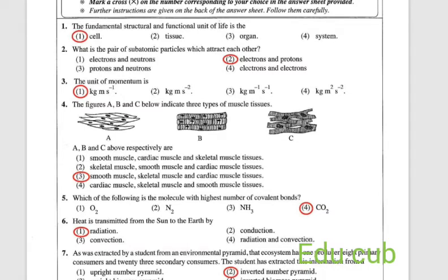Second question: what is the pair of subatomic particles which attract each other? Answers are electrons and neutrons, electrons and protons, protons and neutrons, electrons and electrons. You know electrons have negative charge, protons have positive charge. So it is easy to attract electrons and protons together. Answer is the second one, electrons and protons.